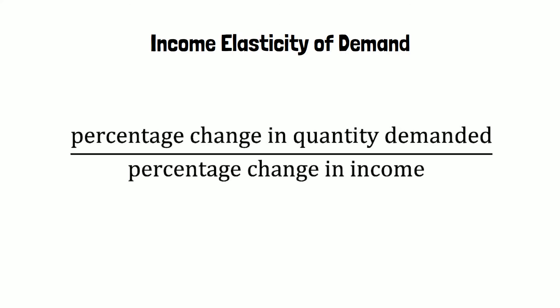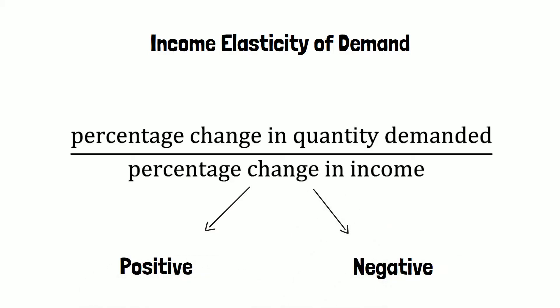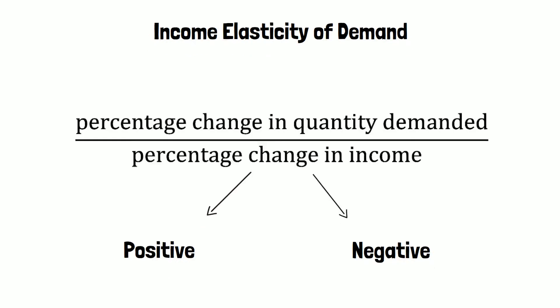We know that price elasticity of demand can be calculated as the percentage change in quantity demanded as a result of a percentage change in price. The formula for the income elasticity of demand is fairly similar. You can see the formula on your screen now — it can be calculated as the percentage change in quantity demanded as a result of a percentage change in income. The coefficient, which is the outcome of the division, can be either positive or negative, and we are going to cover both scenarios.